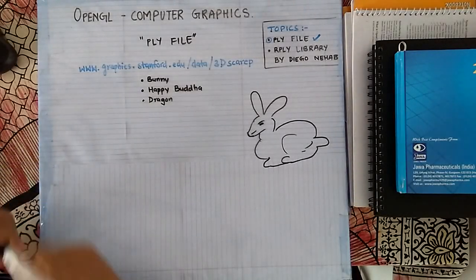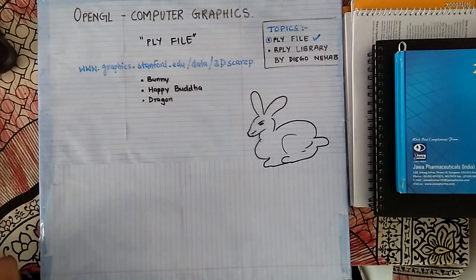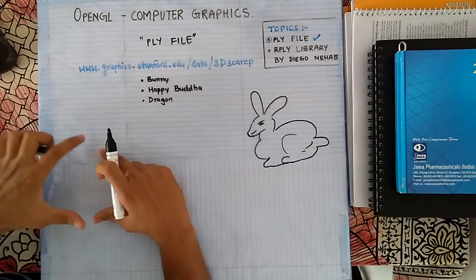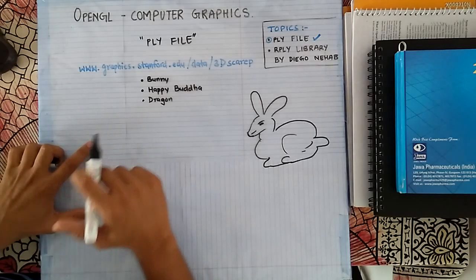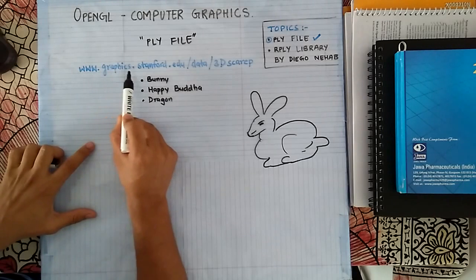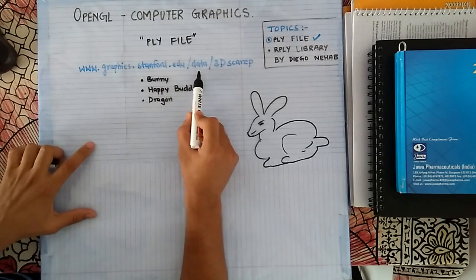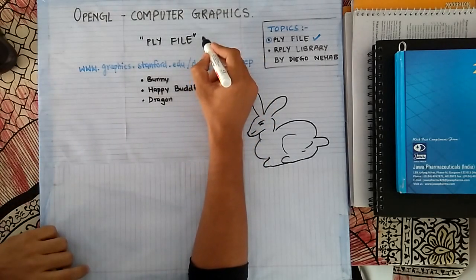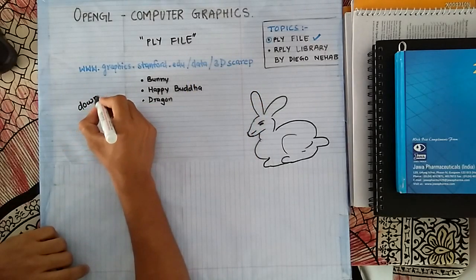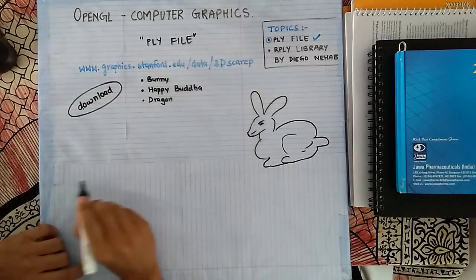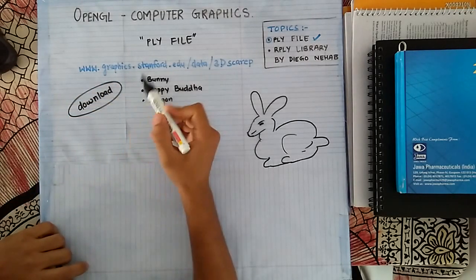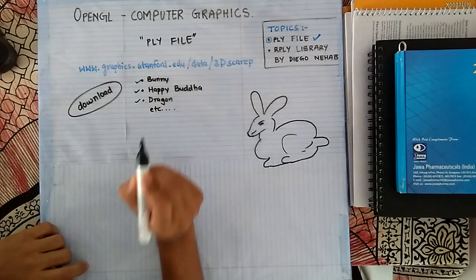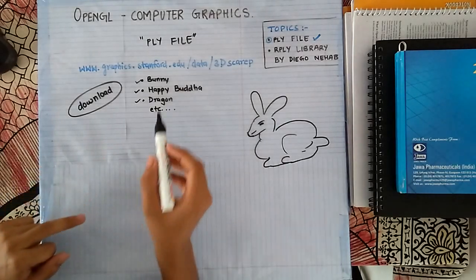In our last video lecture we saw what a PLY file is. I recommend you go to www.graphics.stanford.edu/data/3dscrp where you will find a number of PLY file examples you can download. The PLY files available there include bunny, happy buddha, dragon, and many more.